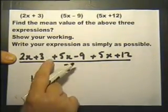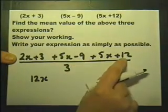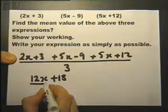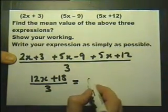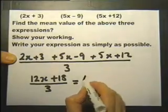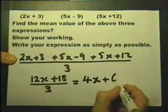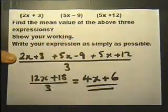I've got 3, take away 9, which is therefore minus 6. Add on 12 is therefore 18, divided by 3. Which means each part of the expression divided by 3. So 12x divided by 3, and 18 divided by 3. Therefore that is the mean of those three expressions.